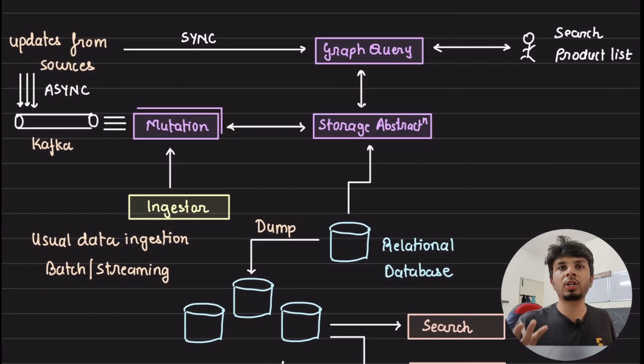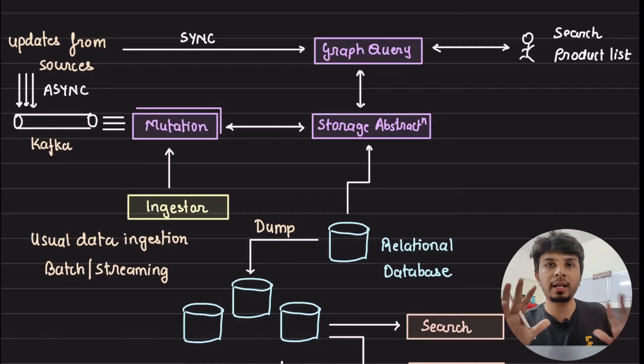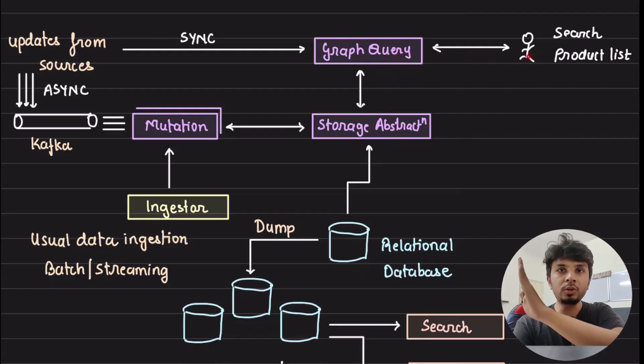A simple high-level architecture is what you can see over here. I'll explain it in a very verbose way. So what you have is your graph has a storage, your relational DB is the storage, right?